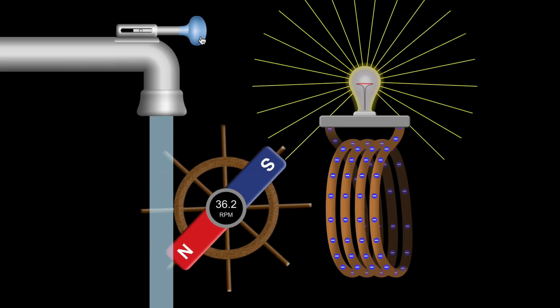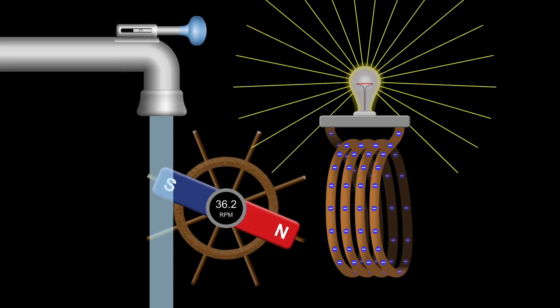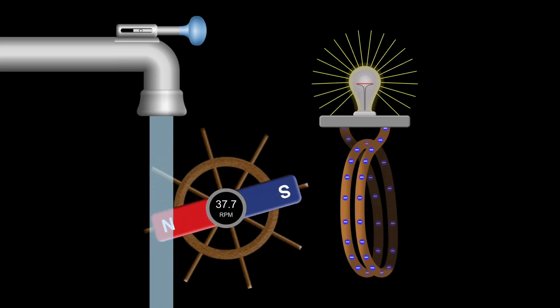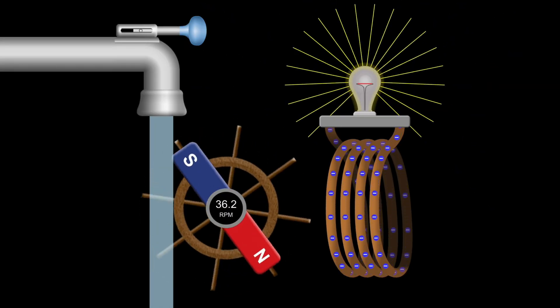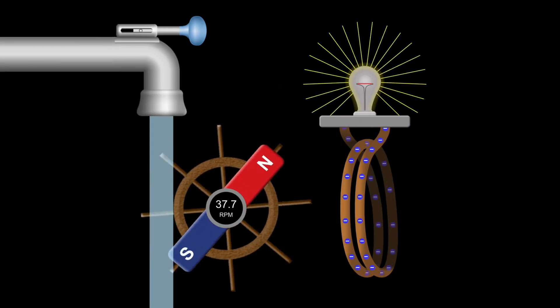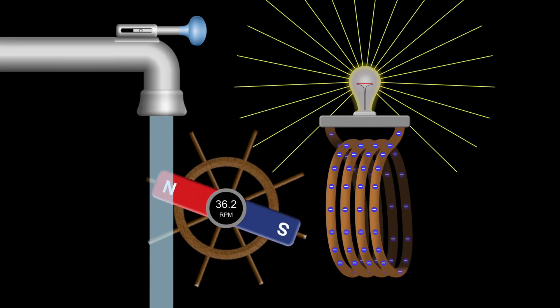Now, every time the magnet spins, its changing magnetic field passes through more wire loops. And just like that, the bulb glows brighter. That makes sense. More loops means more spots for the magnetic field to push the electricity through.